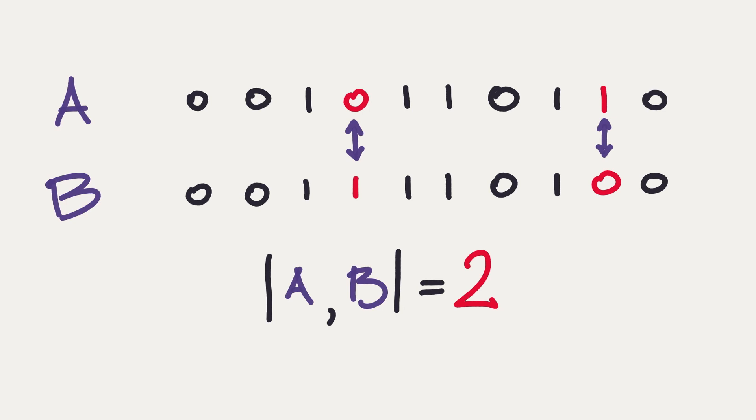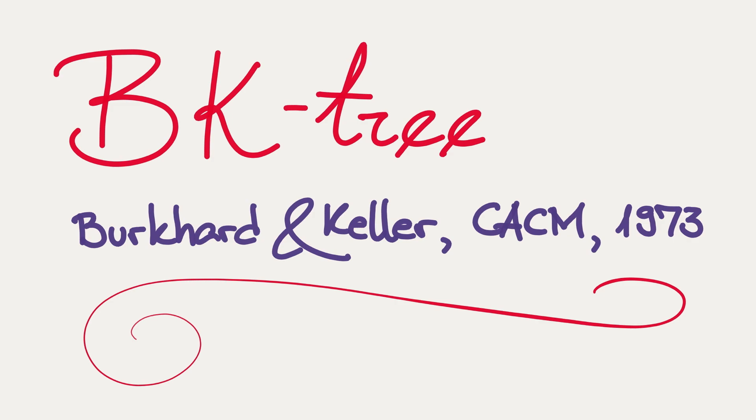And luckily, there is a data structure from the future defined 40 years ago, which solves this exact problem. It's called the BK tree. And it's a tree which is guided by certain properties, whose construction is guided by certain invariants. And it can help us answer the question of, how do I get those hashes quickly?